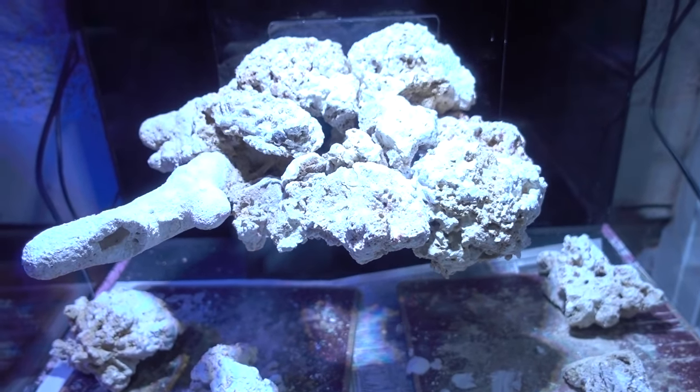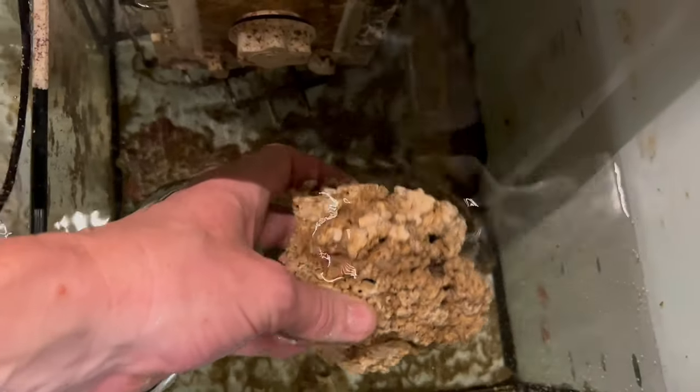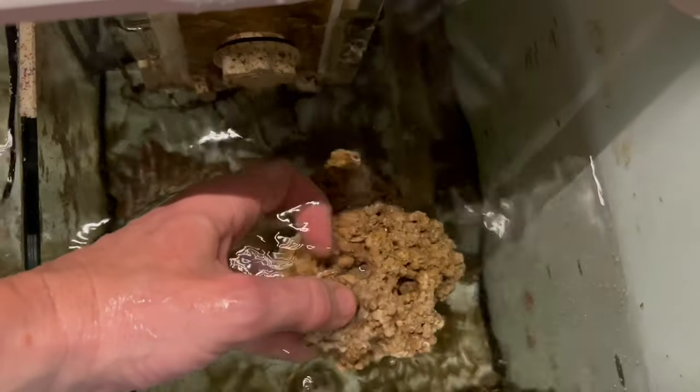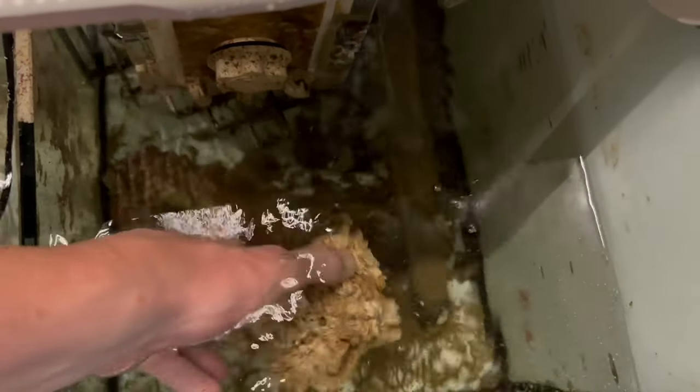You need a combination of both live sand and live rock whether that's some rock rubble from a previous tank or maybe from another reefer. Some LFS are now beginning to get in chunks of live rock that they will sell to you that will definitely help your tank mature in the first twelve months a lot quicker than it otherwise would.